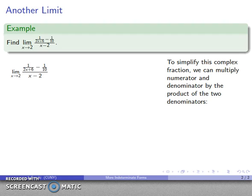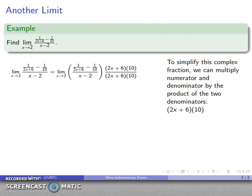So here we're going to multiply by the product of the two denominators that are causing us difficulties. That's 2x plus 6, this denominator up here, and this other denominator, 10. So I'll multiply numerator and denominator by that same quantity, and I'll do a little bit of expansion. Numerator times numerator expression, denominator times denominator expression.